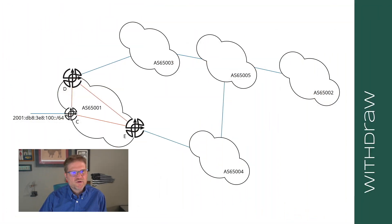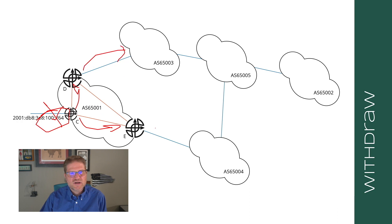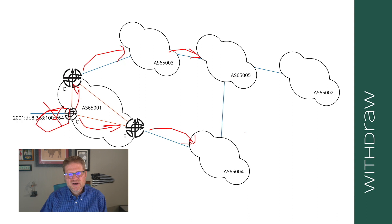Let's talk about how we would remove 100::/64 from the network. If this link fails, C is going to send a withdraw to D and E over IBGP peering sessions. Then D is going to build a withdraw to 65003 and E to 65004. 65003 will send a withdraw to 5, 65004 will send a withdraw to 5, and then 5 is going to send a withdraw to 65002. But how fast do these withdraws propagate through the network for real?